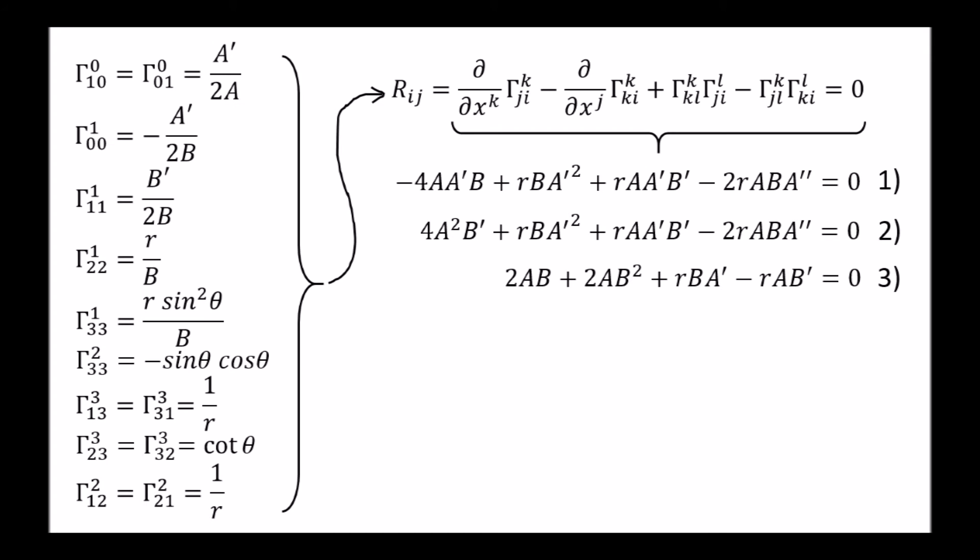Notice that the system seems to be overrepresented. We have more equations than functions. Unless one of the equations is surreptitiously equivalent to one of the other two. No matter. Let's follow the logic and see what we get.